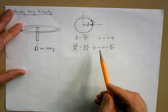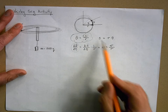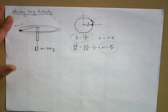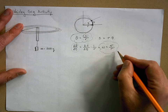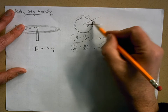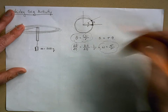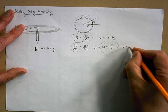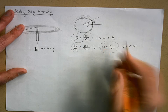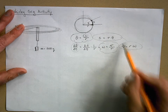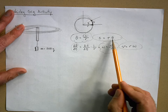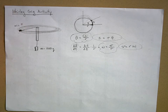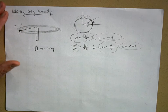These relationships are really important. You can rearrange to get v equals r times omega. Notice the pattern: s equals r times theta, v equals r times omega, and coming up, tangential acceleration equals r times alpha. These are all analogous linear-angular relationships.